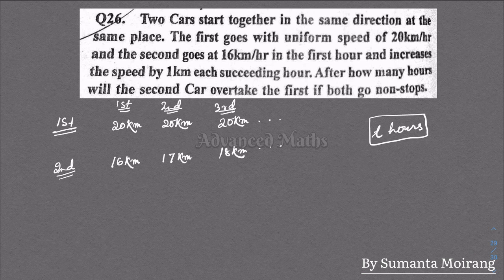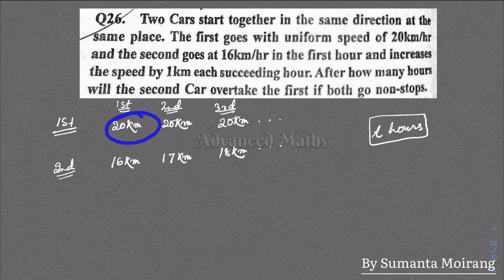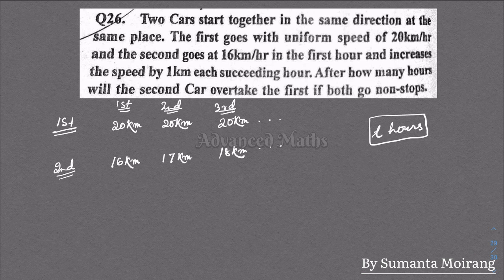For the first car traveling at constant 20 km/hr, after t hours the distance is 20t. After 2 hours, the distance is 40 km.